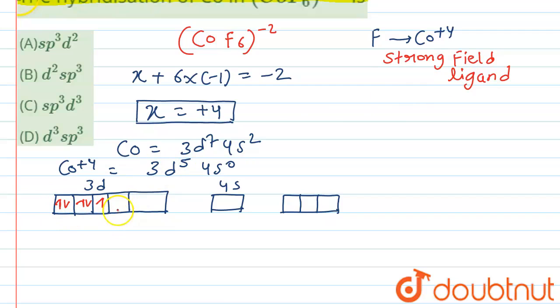So these five electrons are paired like this way, and it will make two d orbitals vacant. Now what happens is that our fluorine will come and donate the lone pair of electrons in these two d orbitals, and then in this s orbital, and then in these three 4p orbitals.